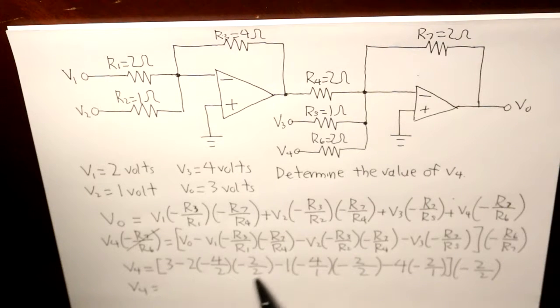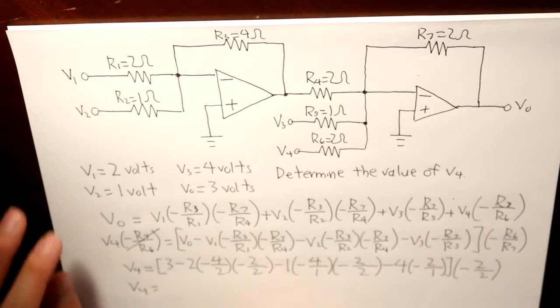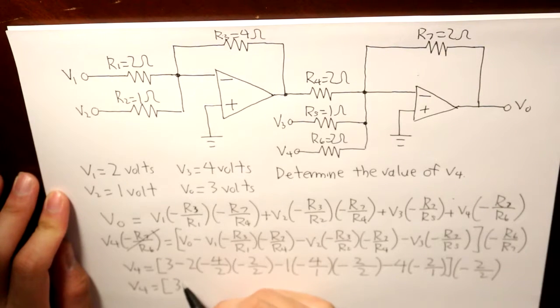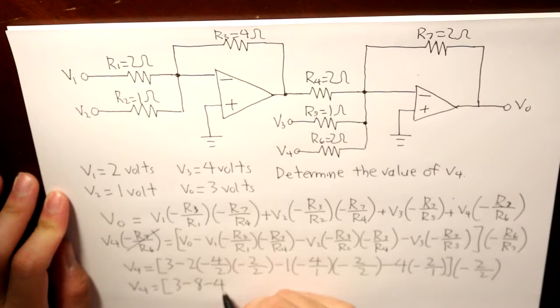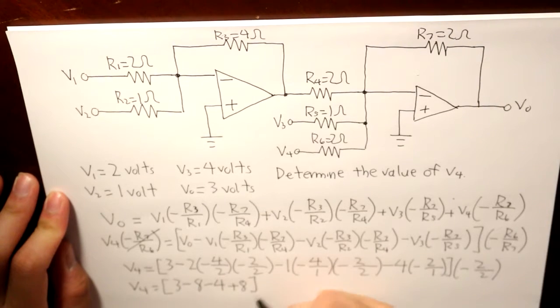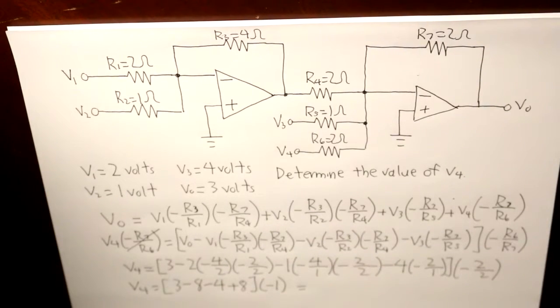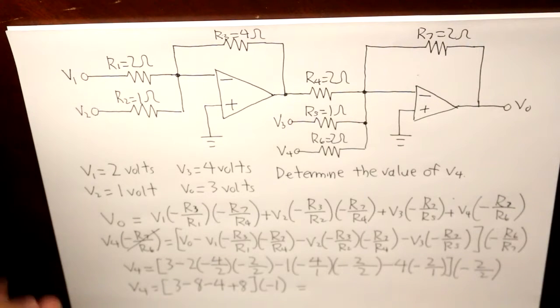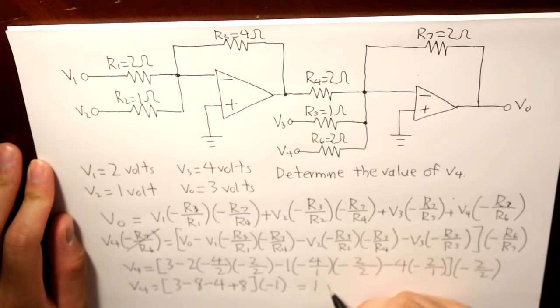So, if we find the value of this term to this term, this term and this term, this is what we're going to get. And then finally, what we get for V4 is basically going to be 1 volt.